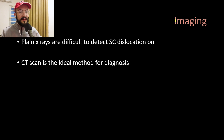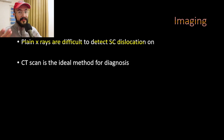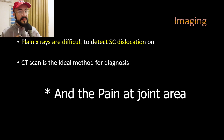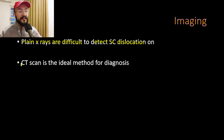Regarding imaging in SC joint injuries: plain x-rays are difficult to use to detect SC dislocation. The best method is to detect them clinically by the swelling that appears over the SC joint area. If it is hard to detect them clinically, then CT scanning is the ideal method for diagnosis.